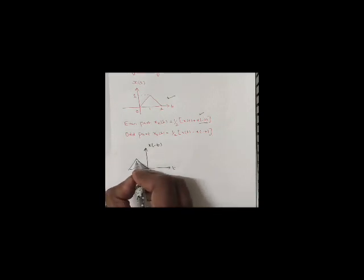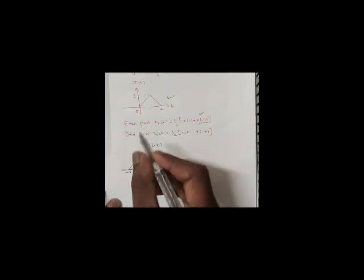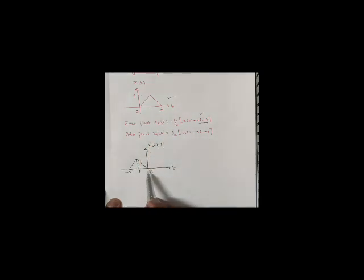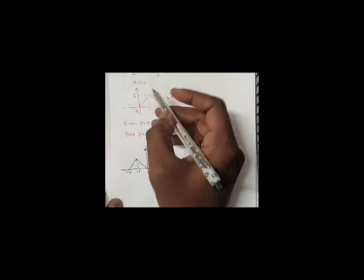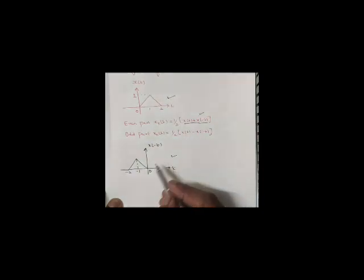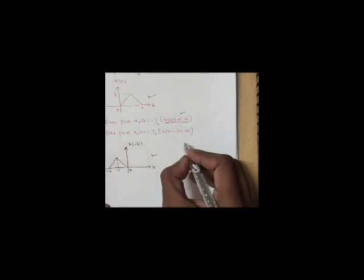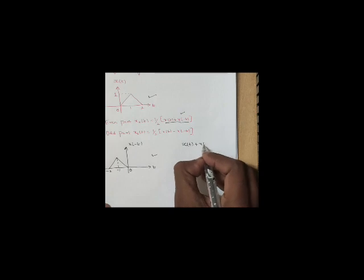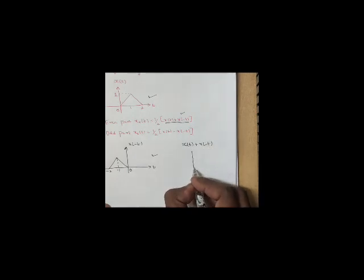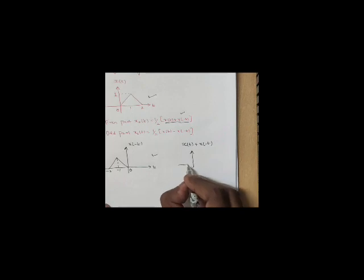At t=0 it stays as is; t=1 becomes t=-1, and t=2 becomes t=-2. So you can see here: the signal is now at 0, -1, and -2. Now we need to add these two signals — we need to add x(t) and x(-t) to get the combined signal.